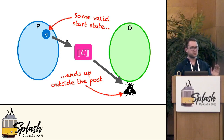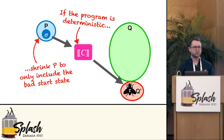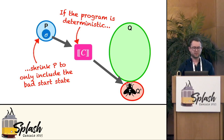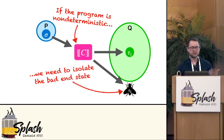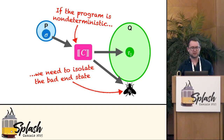If the program is completely deterministic, we can shrink the precondition until we're just characterizing this bad start state and prove that it ends up inside some umbrella of bad end states — and then you've proved that the program has a bug. The problem is that a lot of programs have effects like non-determinism, such as the malloc program, and when the program is non-deterministic you may have some states ending up in good outcomes and some in bad ones. We need some way to isolate the bad outcome, which Hoare logic doesn't really give us.